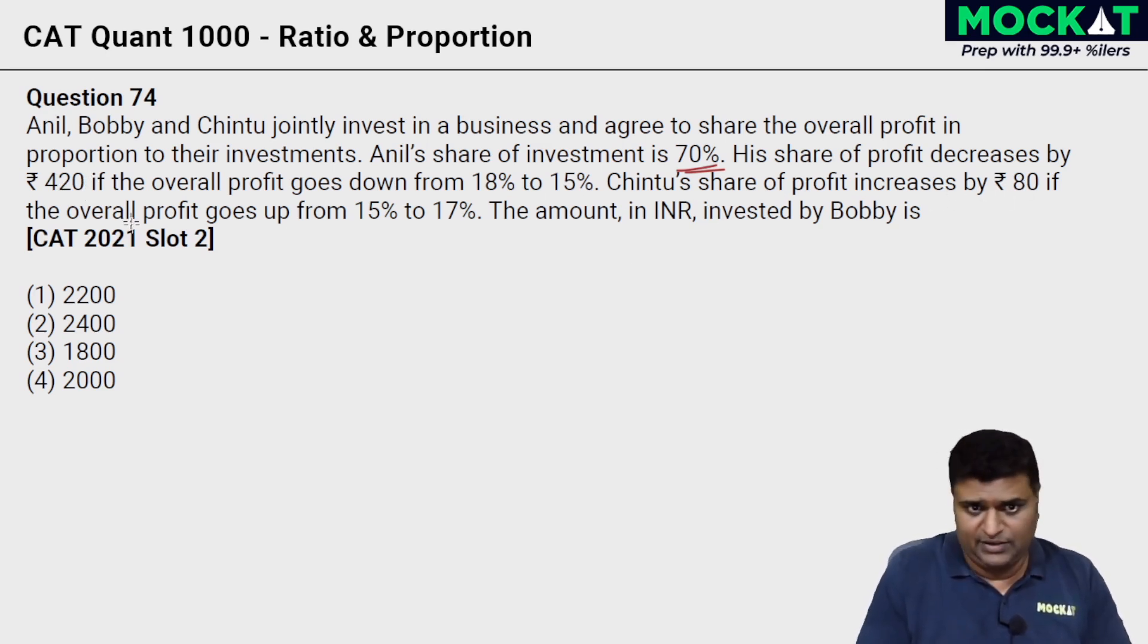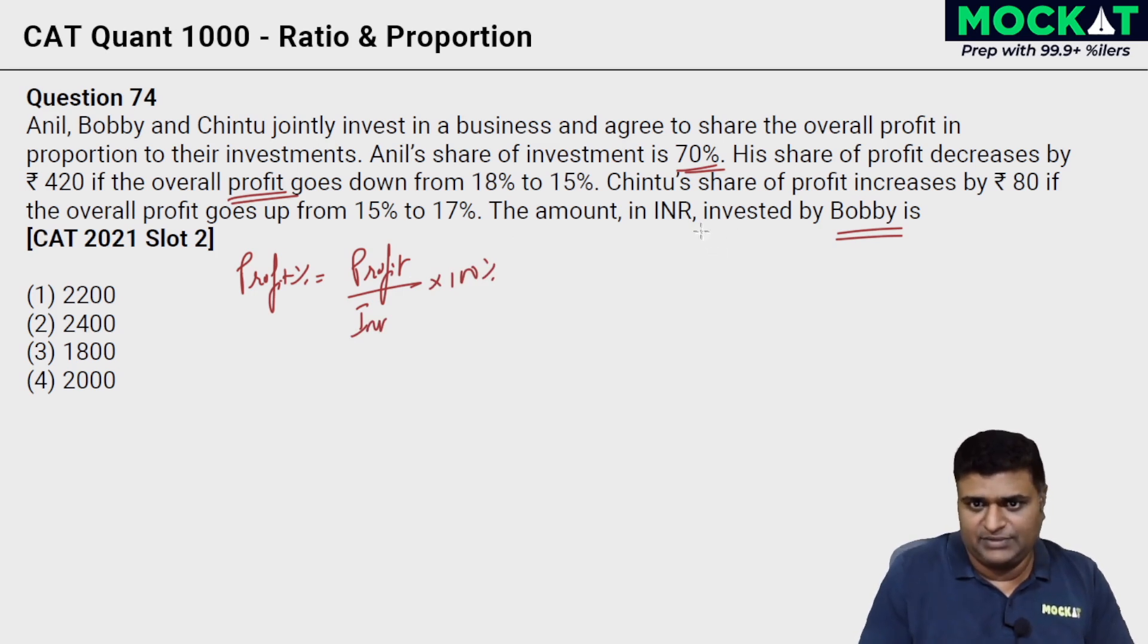Find Chintu's share of profit increased by 80 if the overall profit goes up from 15 to 17%, an increase of 2% there translates to 80 rupees. 2% of sum total is 80. We can find out the amount in INR invested by Bobby. The only thing pertaining to investment is something around the profit, which simply means these 18% or 15% - what does that mean? This 18% or 15% refers to percentage of the total investment, which is the profit. Profit as a percentage of total investment is what these have to be. Otherwise we won't be able to solve the question itself. These percentages are given to us.